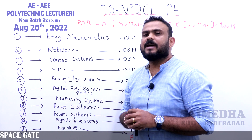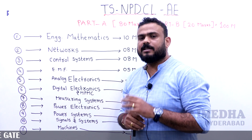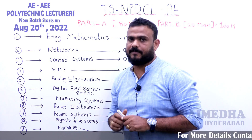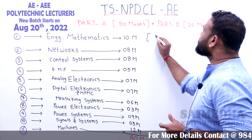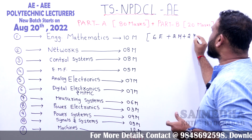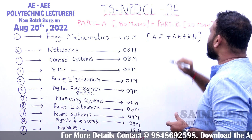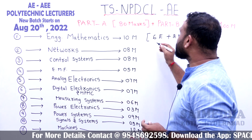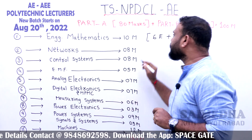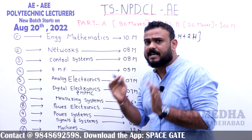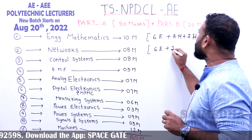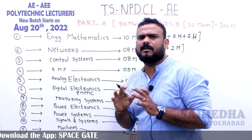Out of 10 marks in Engineering Mathematics, 6 questions are easy, 2 questions are moderate, and 2 questions are a little tough. If you are able to solve 8 out of 10, you are in the safe zone. For Network Theory, 6 questions are easy and 2 questions are moderate — no tough questions were given.